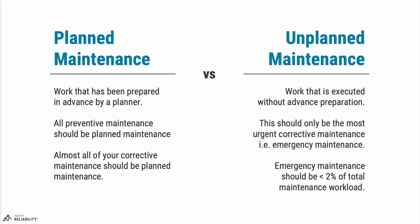To summarize: planned maintenance is work that has been prepared in advance by a planner. All your preventive maintenance should be planned maintenance, and almost all of your corrective maintenance should be planned maintenance. Unplanned maintenance is work executed without advanced preparation — this should really only be the most urgent corrective maintenance, i.e., emergency maintenance, which should be less than 2% of your total workload.